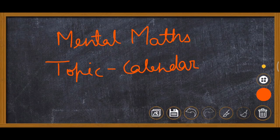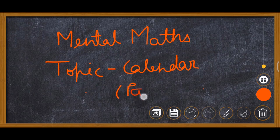Today we are doing mental math; the topic is calendar. In the previous video we learned how to find out leap year or ordinary year, and when the calendar will repeat. Today we will learn about how to find out the day on the given date — which day is on a calendar — without the help of a calendar.